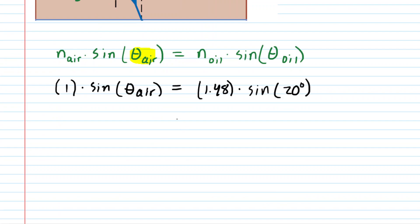We've plugged all the data in, and on the right hand side, setting your calculator to degree mode, you can multiply the 1.48 by the sine of 20. You should get the following value.